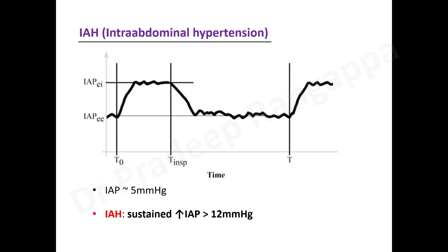The normal intra-abdominal pressure is 5 mmHg. We call it intra-abdominal hypertension only when there is a sustained increase in intra-abdominal pressure. A transient increase does not constitute IAH — pressure can go up due to physiological events like coughing or vomiting. There has to be a sustained increase more than 12 mmHg to constitute intra-abdominal hypertension.